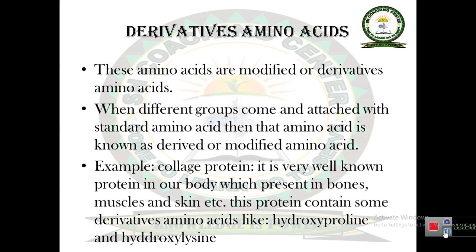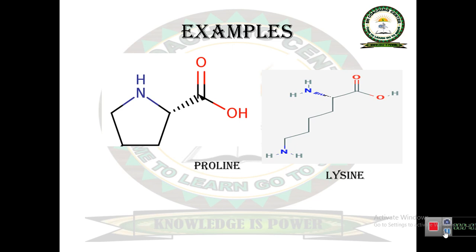The first group is derivatives amino acids. These are modified or derivatives amino acids — that means when different groups come and attach with standard amino acids, that amino acid is known as a derived, modified, or derivatives amino acid. For example, collagen protein is a very well-known protein in our body, present in bones, muscles, and skin. This protein contains derivatives amino acids like hydroxyproline and hydroxylysine. Proline and lysine are standard amino acids; when a hydroxyl group is attached with them, they become derivatives amino acids.